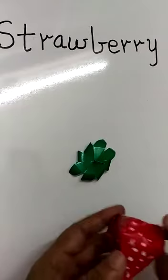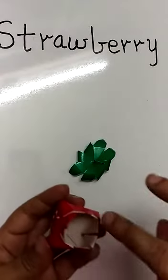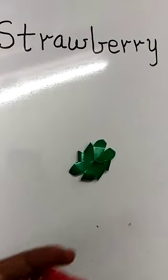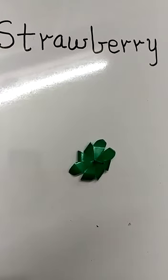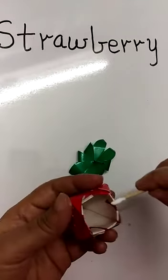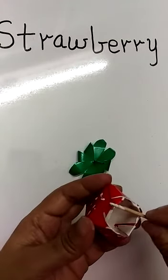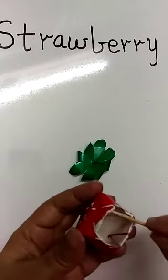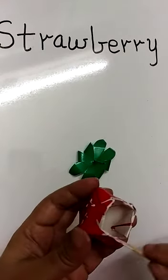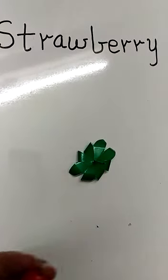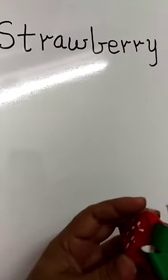This has dried up. We are going to put fevicol on these four edges. So you take fevicol like this, put it on all the four sides, and stick the leaf.